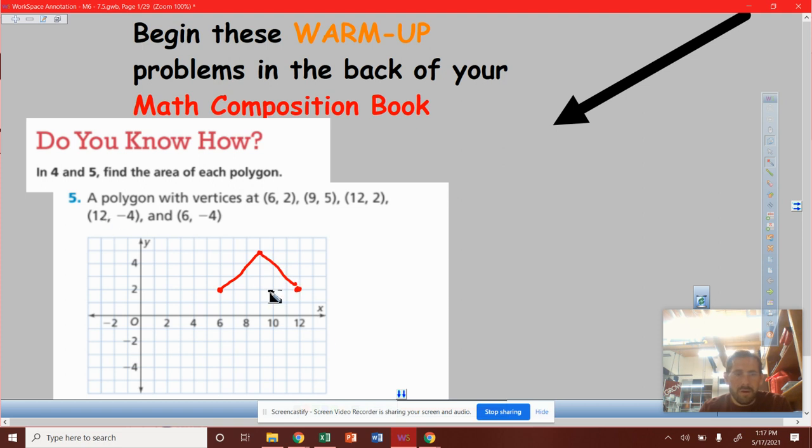And then I can go 12, negative four. So here's 12 again. We go down four. And then we can go six, negative four. So here's six, down four.